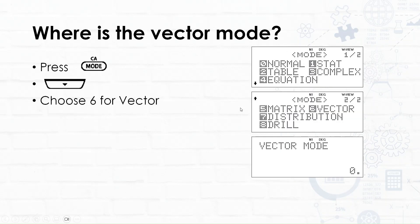So first, where is the vector mode? Very easy to find. You're going to press your mode button, press your down button, and you'll see at option number six it says vector. So just choose 6 for Vector.